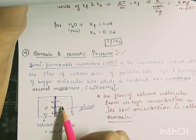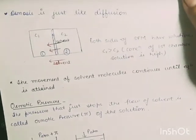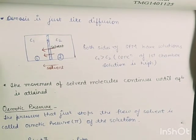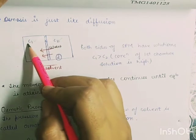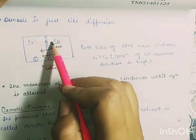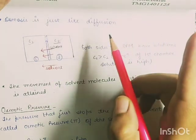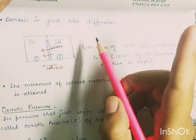Osmosis is like diffusion — both involve movement from high concentration to low concentration. The difference is that diffusion involves movement on both sides between two solutions C1 and C2. In osmosis, movement is one-directional, and that movement is of solvent molecules only.